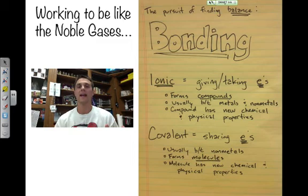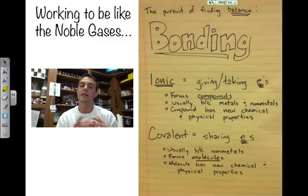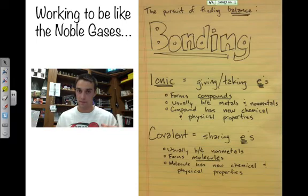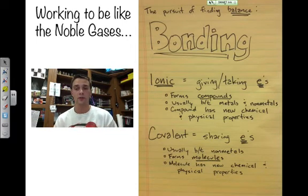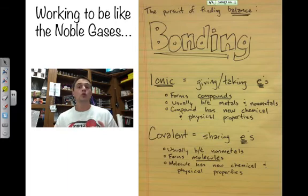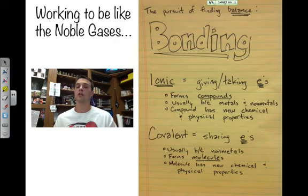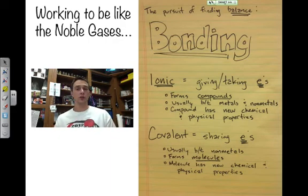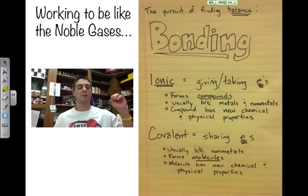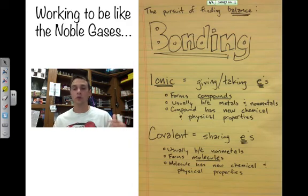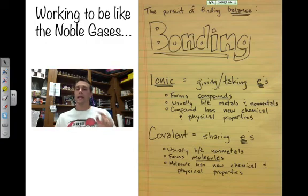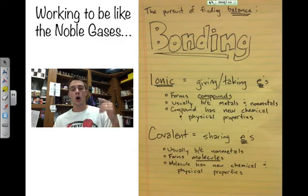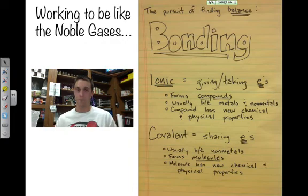Covalent bonding, that is a stronger bond than ionic bonding. Why? Because they're not giving and taking electrons, they're actually sharing electrons. The new substance that is formed from a covalent bond between two or more different elements is called a molecule. That new molecule, like an ionically formed compound, has a brand new set of chemical and physical properties as well. Elements that usually take part in covalent bonding are typically non-metals.